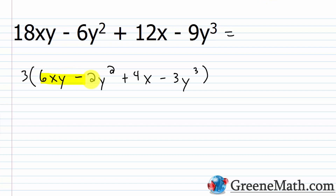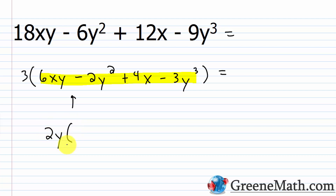Now I'll work inside the parentheses. If I just take the first two terms and last two terms as groups, I won't get a common binomial factor. The GCF of 6xy and 2y² is 2y, leaving (3x - y). But for 4x - 3y³, the GCF is just 1 or negative 1, and that won't match up with (3x - y). So we need to try a different arrangement.